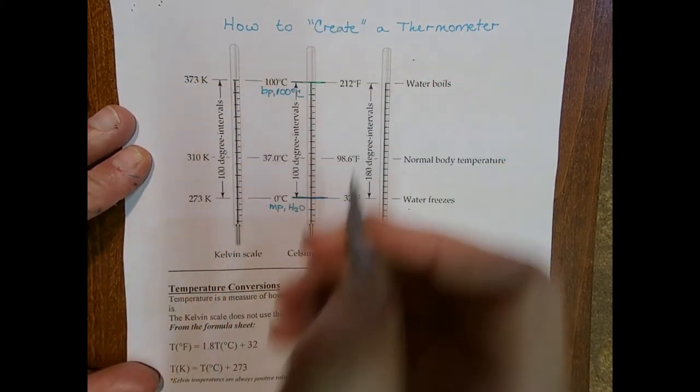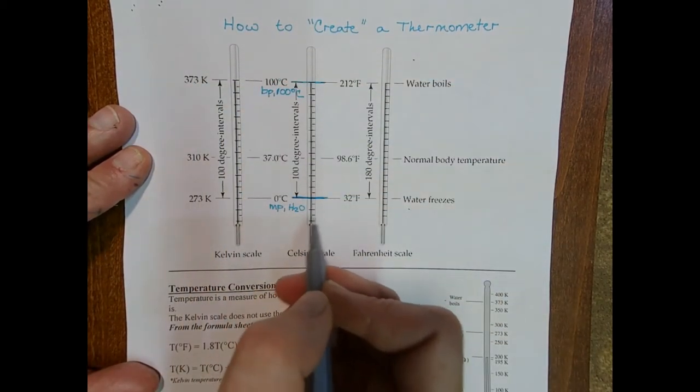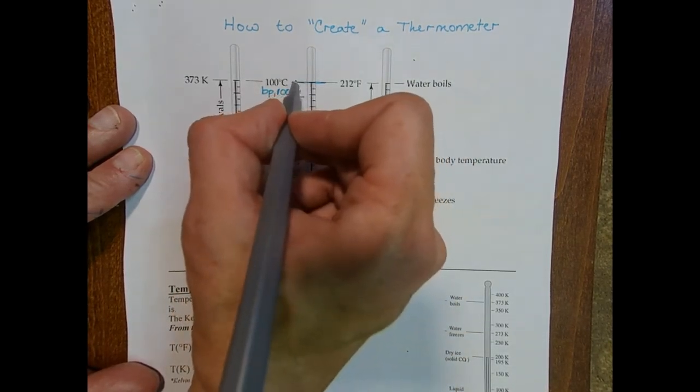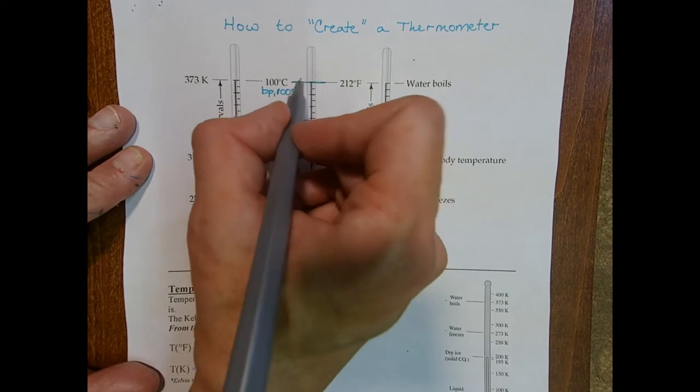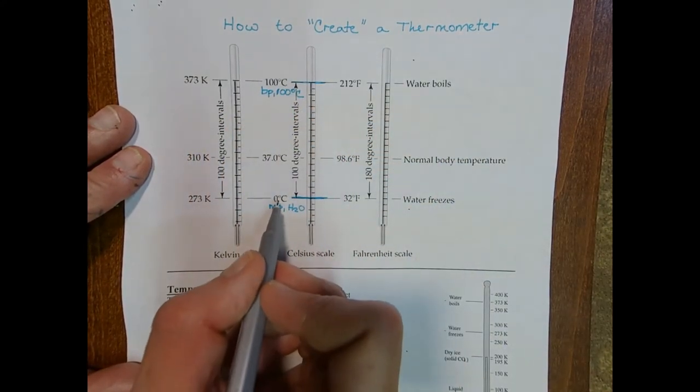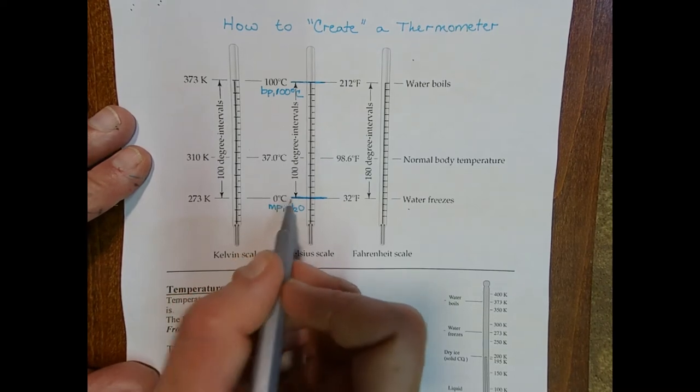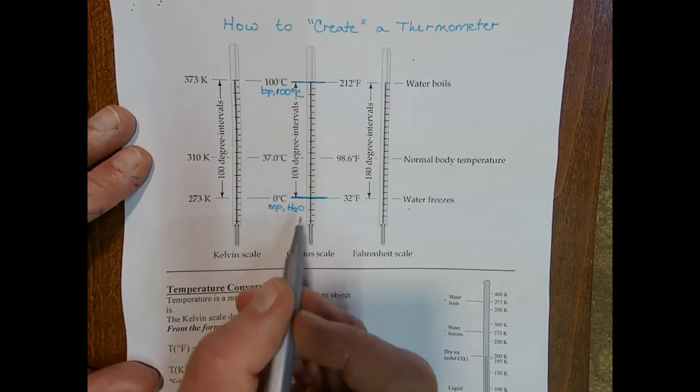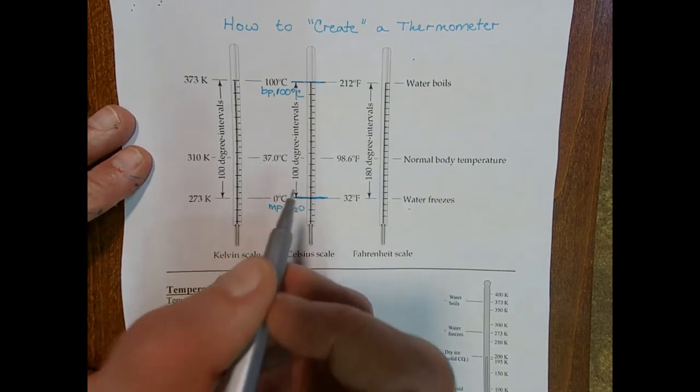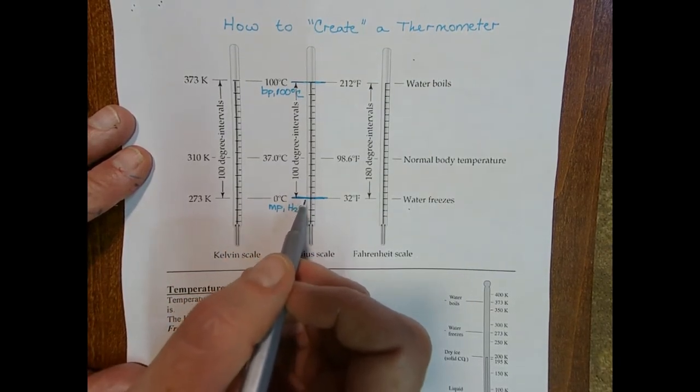And so you'll wait till you give the liquid enough time to expand. And then once you're certain that it's done expanding in that boiling water, you'll make your second mark. And then you'll just divide. You can use a ruler or whatnot. Divide the distance into 100 equal segments. And each one of those segments is equal to one degree Celsius.